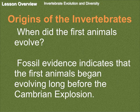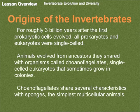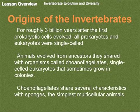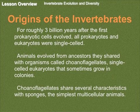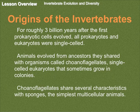Fossil evidence indicates that the first animals began evolving long before the Cambrian Explosion. For roughly three billion years after the first prokaryotic cells evolved, all prokaryotes and eukaryotes were single-celled. Animals evolved from ancestors that shared traits with organisms called choanoflagellates — single-celled eukaryotes that sometimes grow in colonies. Choanoflagellates share several characteristics with sponges, the simplest multicellular organisms. We're going to focus a lot on sponges, the phylum Porifera.